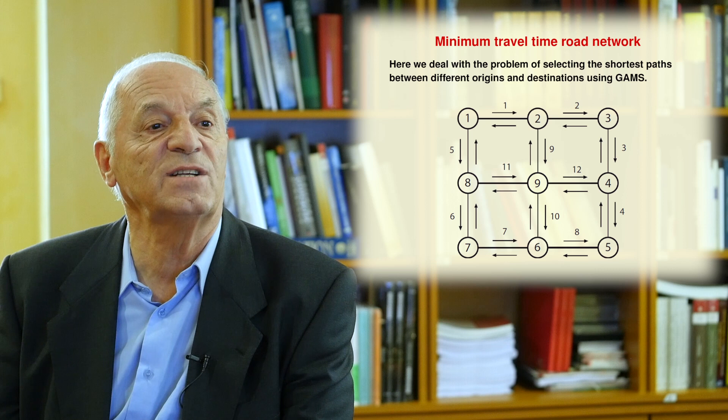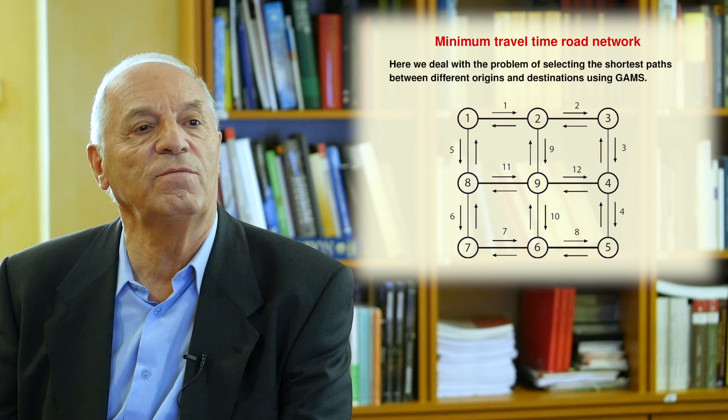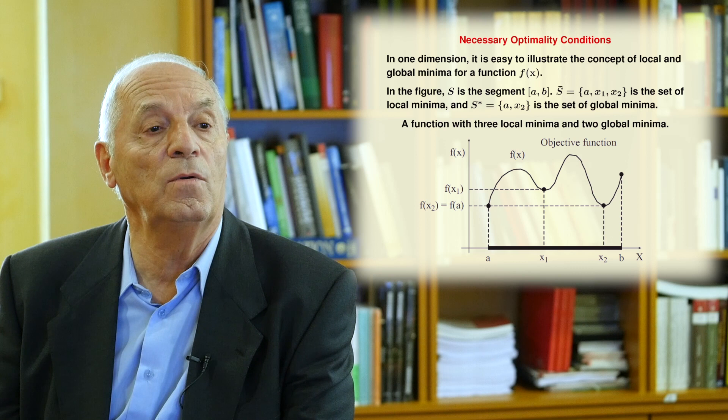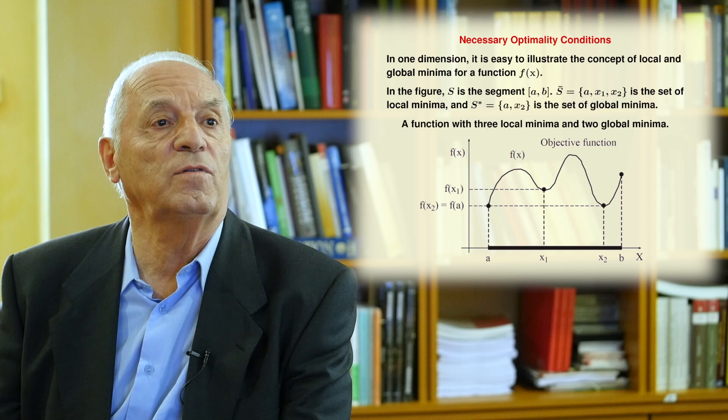Another example we will treat is the case of a transportation network, where you are interested in knowing the transportation time for each of the links and want to know the minimum travel time from every pair of nodes. At the end of this nonlinear section, we will discuss the necessary and sufficient conditions for optimality.